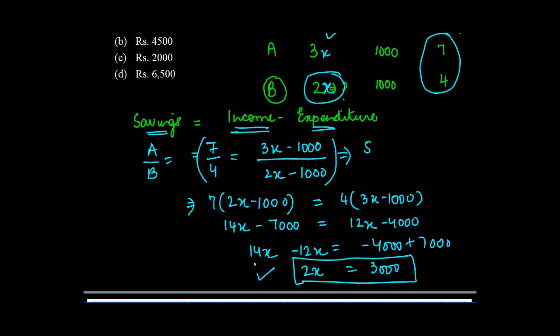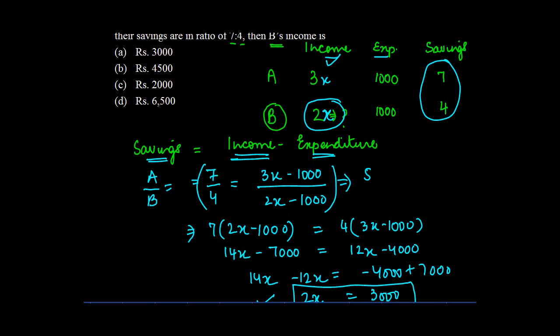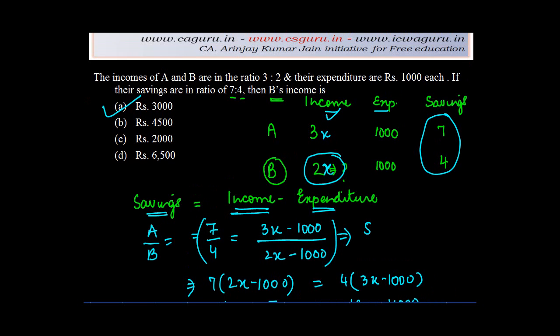B's income equals 3000, which is option A. The only thing worth understanding here is what saving stands for: income minus expenditure. You are given the ratio of savings, you find out what the savings will be in terms of the given data, and then equate the two.